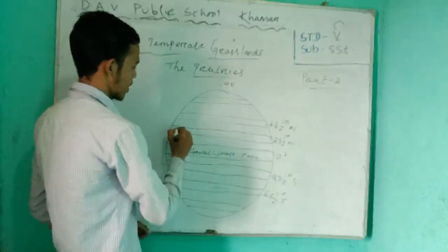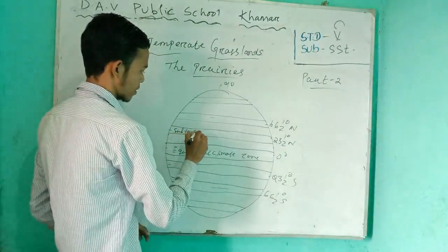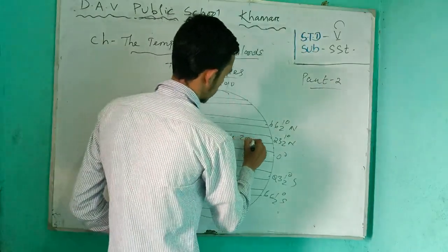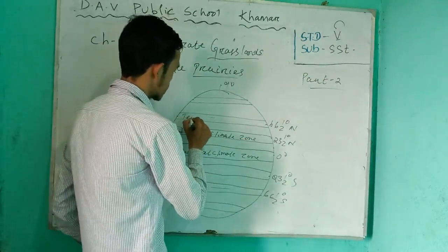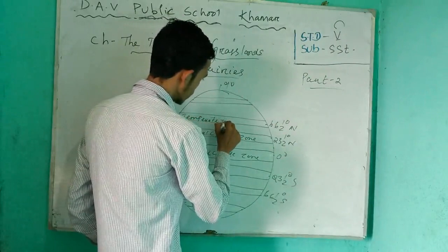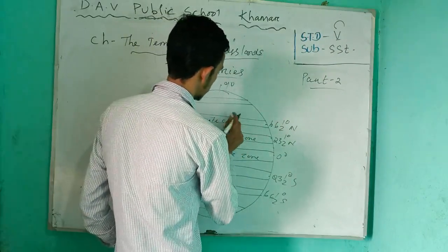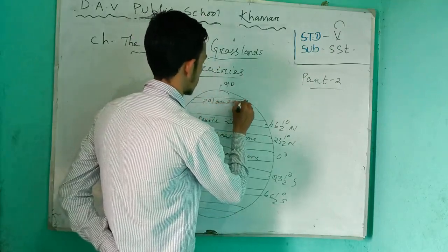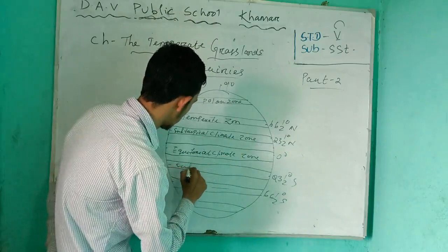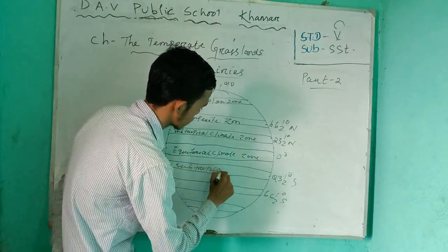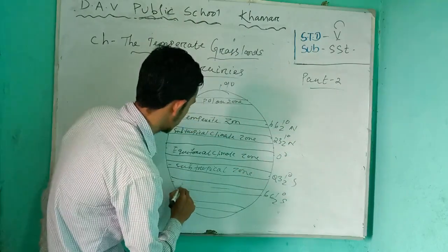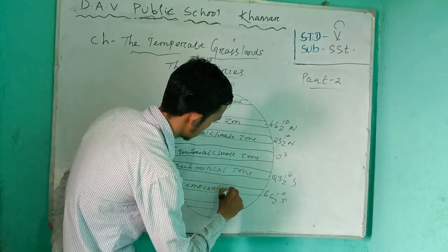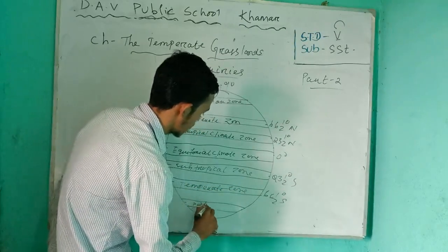Then subtropical climate zone, then temperate climate zone, and then the polar zone. Here also on the other side: subtropical zone, temperate zone, and polar zone.